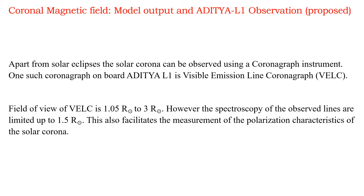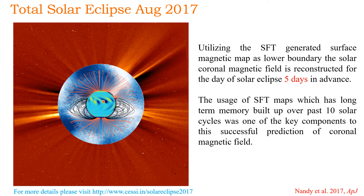The PFSS model generates the magnetic field structure up to the source surface at 2.5 solar radii. Apart from solar eclipses, the solar corona can be observed using a coronagraph instrument. One such coronagraph on board Aditya-L1 is the Visible Emission Line Coronagraph (VELC), which has a field of view until three solar radii; however, spectropolarimetry is limited to 1.5 solar radii. Observations from VELC also facilitate measurement of polarization characteristics in the solar corona, which are key to constructing the vector magnetic field in the plane of sky.